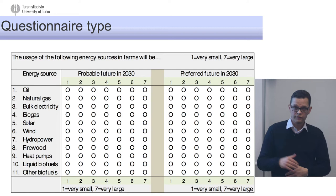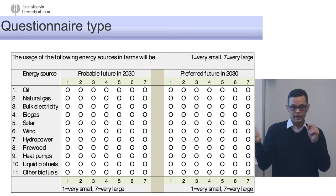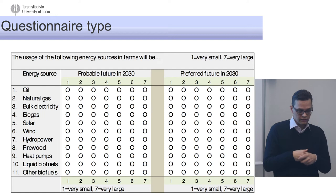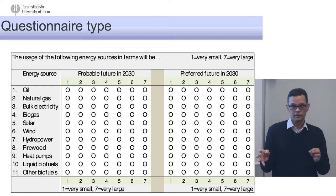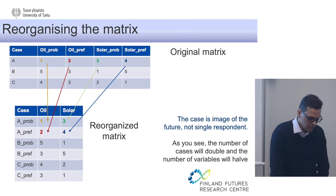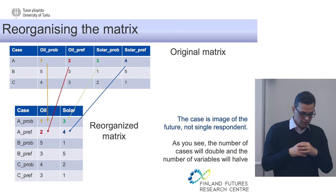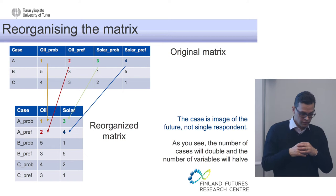This is the type of questionnaire that we used. You can see from the rows each of the 11 energy sources. We asked about the probable future up to 2030 and the preferred future, and they are here side by side so that you can actually relate the answers to each other. It's a seven-step Likert scale — it doesn't define any megawatt hours or that kind of specific things, but they are more like scenarios which show the direction where the world would be evolving in the future. When we got the answers, we reorganized the matrix and used both estimates of the preferred future and the probable future as two different cases or units of analysis in the cluster analysis.